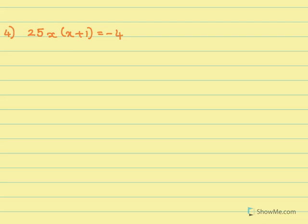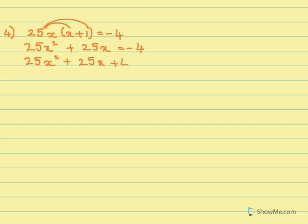Now here we have the fourth problem. We need to open the bracket, multiplying to get 25x square plus 25x equals minus 4. Bringing all terms to one side: 25x square plus 25x plus 4 equals 0. Now it's time to do middle term split. The product should be 25 times 4, which is 100, and the sum should be 25.